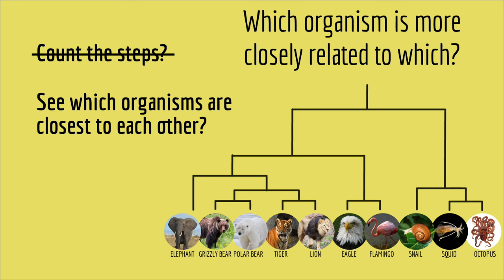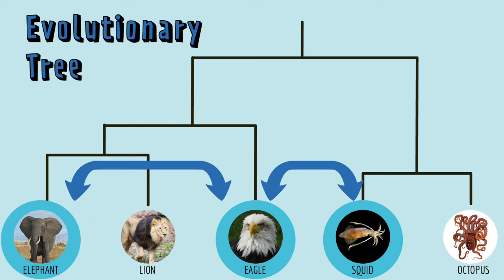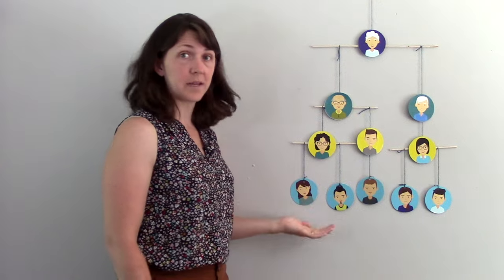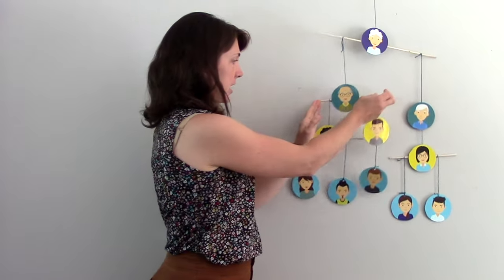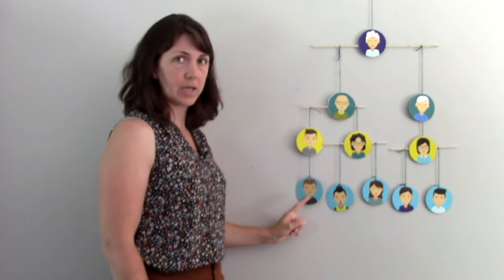Another possibility is to see which organisms are closest to each other on the tips of the tree. On this tree, eagles are farther away from elephants than they are to squid. Are eagles more closely related to squid than they are to elephants? To help us think about this, let's go back to my family tree. I've constructed my family tree as a mobile. There's me. You know intuitively that I'm more closely related to my cousin, Michael, than I am to my second cousin, Megan. Now, if I rotate here where my grandpa George is, now I'm close to Megan in the tree, and I'm far away from my cousin, Michael.